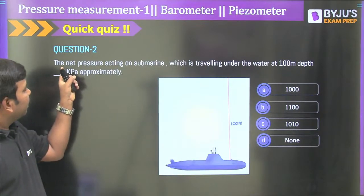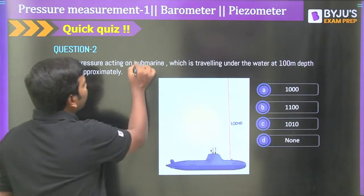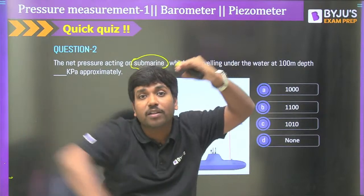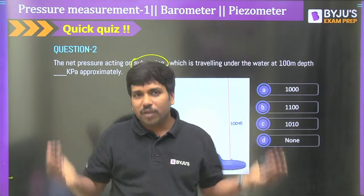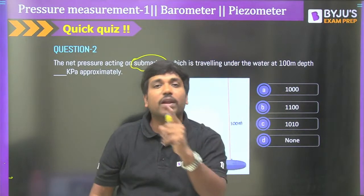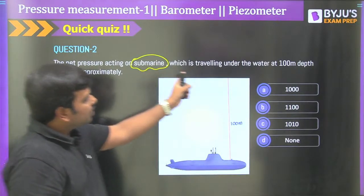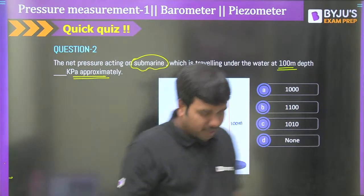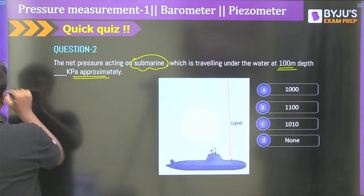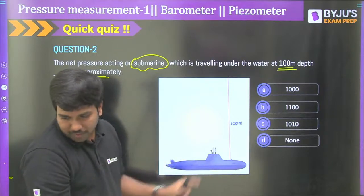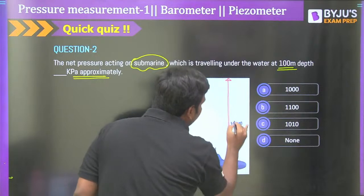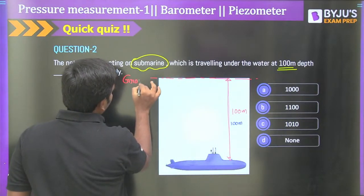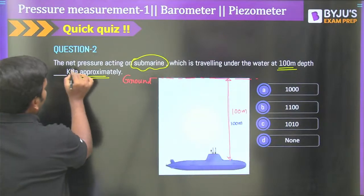The second question: what is the net pressure acting on a submarine which is traveling under water at 100-meter depth, in kilopascals? A submarine is a warship traveling under water — used by armed forces. The net pressure means absolute pressure. Since the submarine is underwater at 100 meters depth, we need to calculate atmospheric pressure plus gauge pressure from the fluid column.